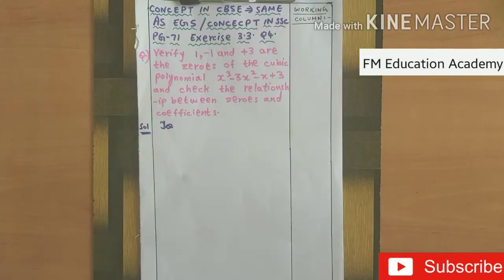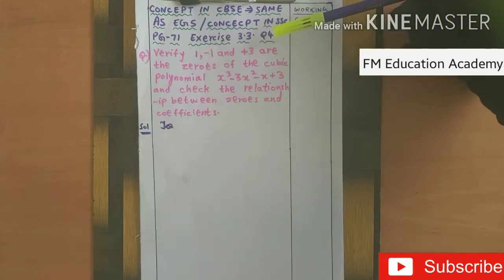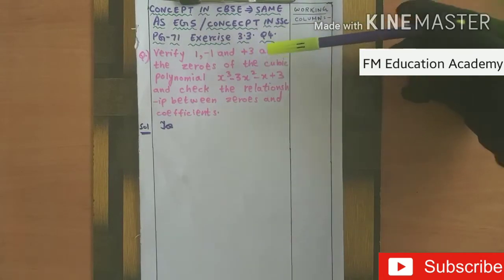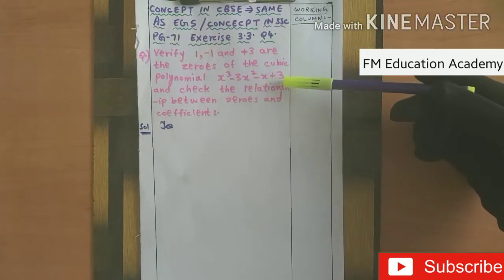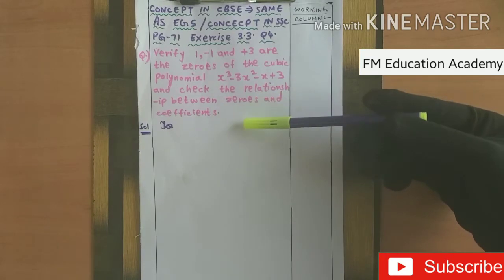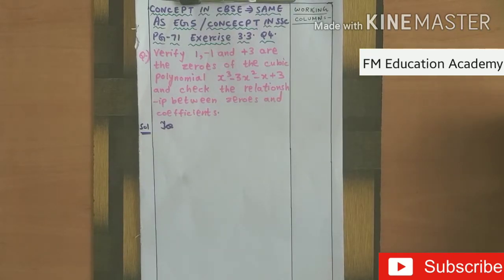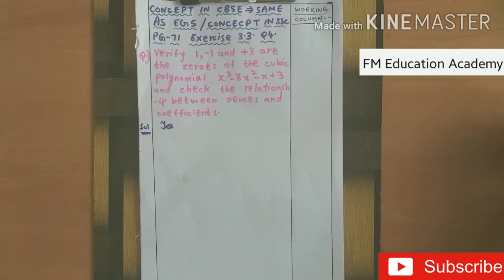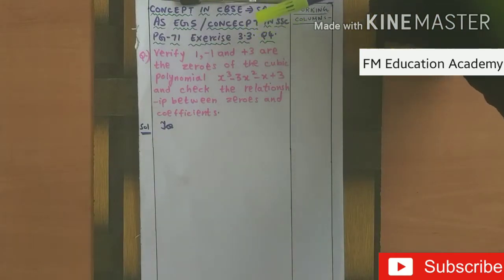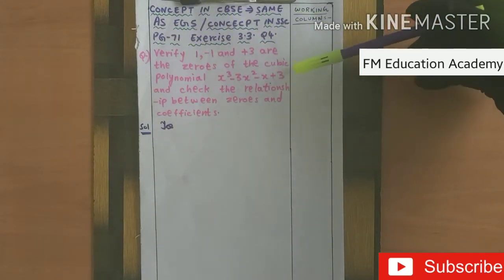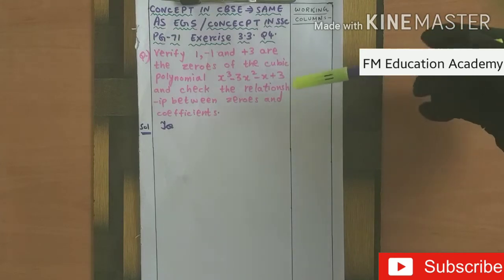We will check whether 1, minus 1, and plus 3 are the zeros of a cubic polynomial, and we are going to check the relationship between the zeros and coefficients. On my channel I have uploaded videos on finding zeros of quadratic polynomials, finding a quadratic polynomial from zeros, and the relationship between zeros and coefficients of quadratic polynomials. Today we are going to see a problem on cubic polynomials.